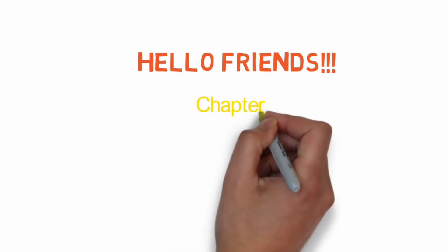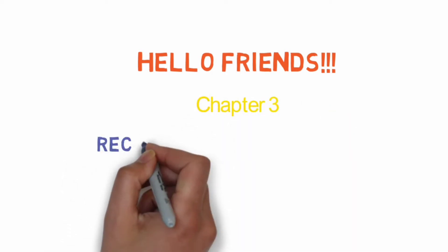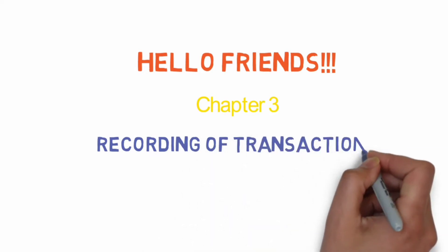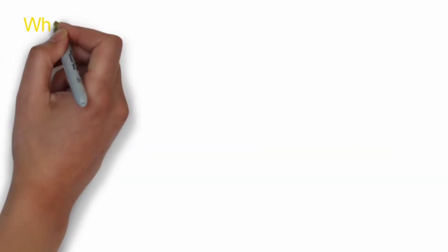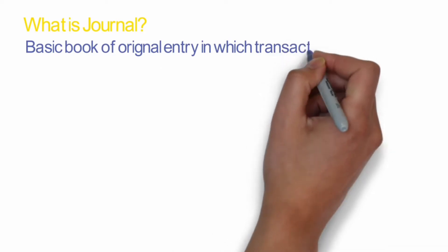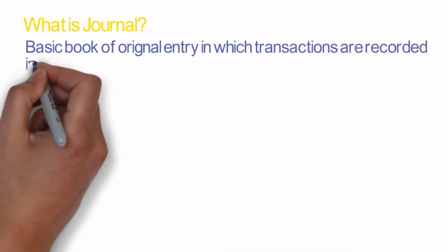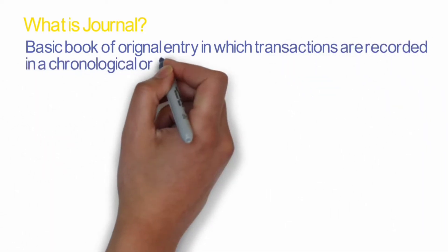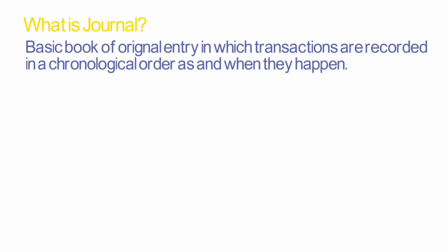Hello friends, in this video we will discuss Chapter 3 of accounts, that is 'Recording of Transactions.' Let's start. What is journal? Journal is a basic book of original entry in which transactions are recorded in a chronological order as and when they happen. Books of original entry means that for the first time, transactions are being recorded in that book.